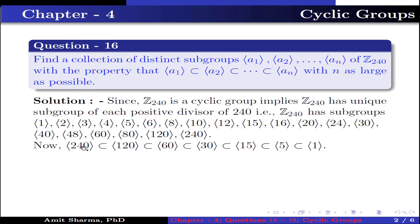The subgroup generated by 240 is contained in the subgroup generated by 120, because 120 divides 240. The subgroup generated by 120 is contained in the subgroup generated by 60, because 60 divides 120. The subgroup generated by 60 is contained in the subgroup generated by 30, because 30 divides 60. The subgroup generated by 30 is contained in the subgroup generated by 15, which is contained in the subgroup generated by 5, which is contained in the subgroup generated by 1.